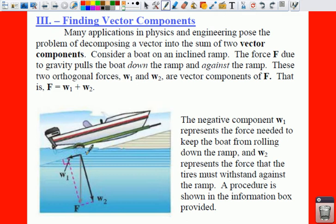The other force, your W sub 2, is the force that the tires must withstand against the ramp. So these two vectors are actually orthogonal. They have a 90 degree angle here. That's what orthogonal means.